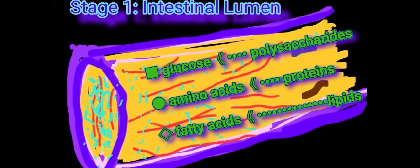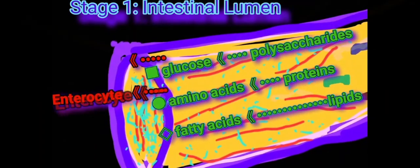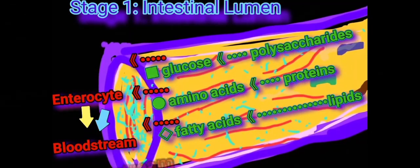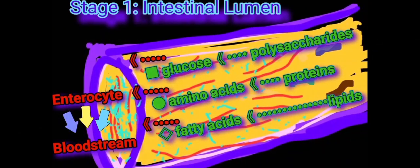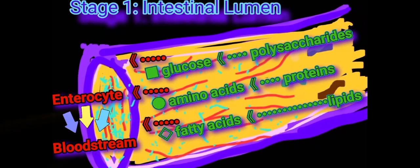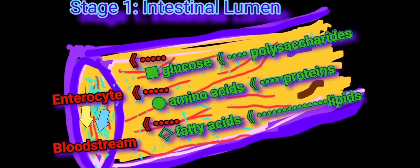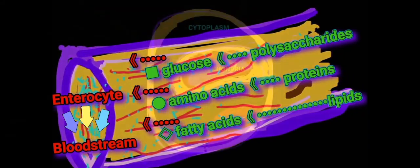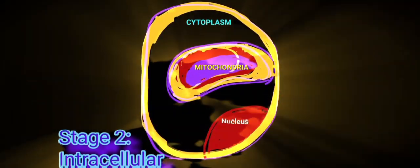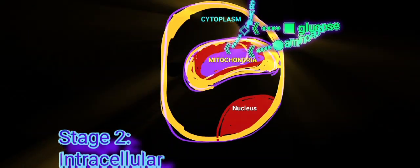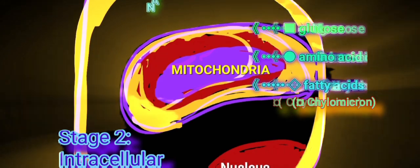Glucose and amino acids are picked up by the enterocytes and eventually released into the bloodstream, whereas digested lipids — fatty acids and monoacylglycerols — are reassembled into a chylomicron, a triacylglycerol-rich molecule, and then released into the bloodstream. After their pickup from circulation, glucose, amino acids, and fatty acids are catabolized inside the cell.